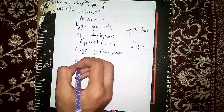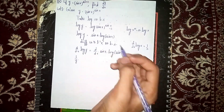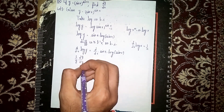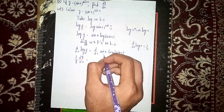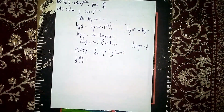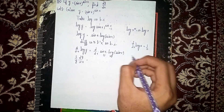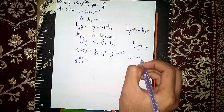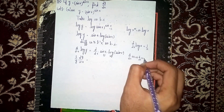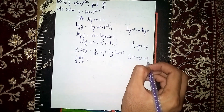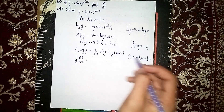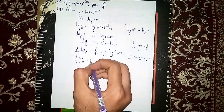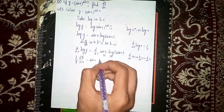Applying that formula, the left side becomes (1/y)·dy/dx. On the right side we have a product, so we apply the product rule. The product rule states: d/dx of u·v is equal to u·d/dx(v) + v·d/dx(u). Here u = sin(x) and v = log(sin x).